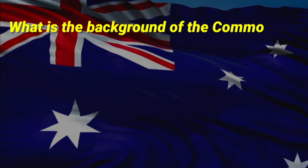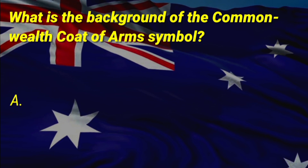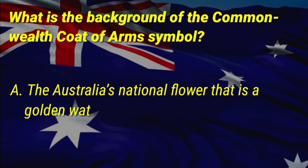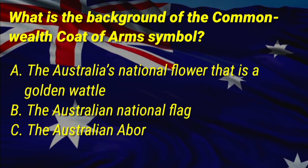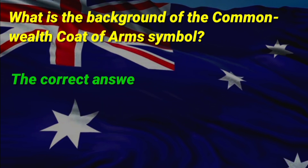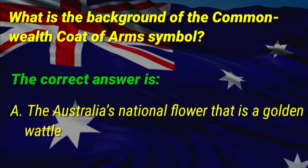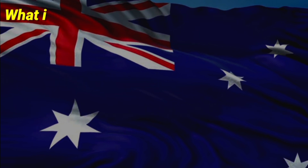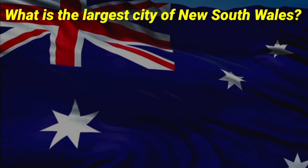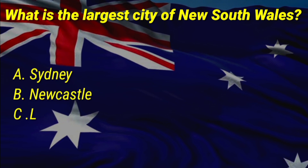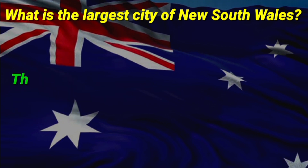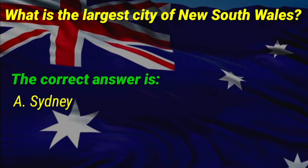What is the background of the Commonwealth coat of arms symbol? A: Australia's national flower, the golden wattle, B: the Australian national flag, C: the Australian Aboriginal flag. The correct answer is A, Australia's national flower, the golden wattle. What is the largest city of New South Wales? The correct answer is A, Sydney.